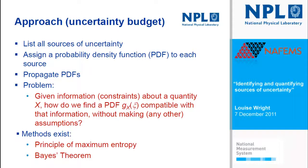The way we approach uncertainty evaluation within the measurement community is to create something called an uncertainty budget. This gives you a structure to know that you've taken everything into account. It consists of a list of all the sources of uncertainty and assigns a probability density function to each of those sources, and then the budget allows you to propagate and combine the PDFs. The question you have to ask yourself is: given a set of information, how do I know what PDF to assign?